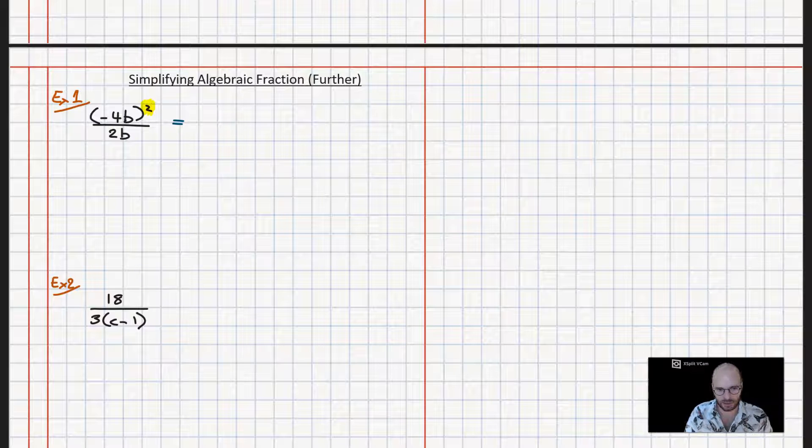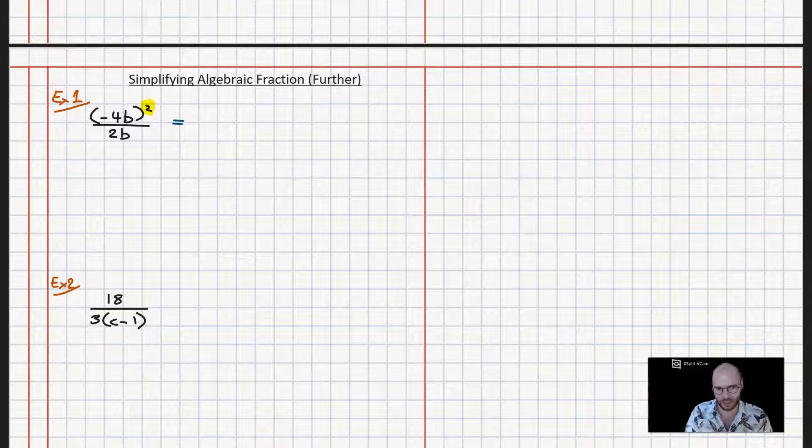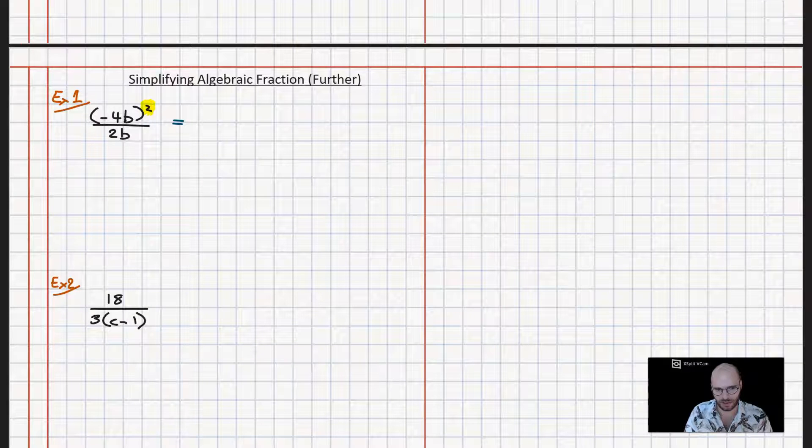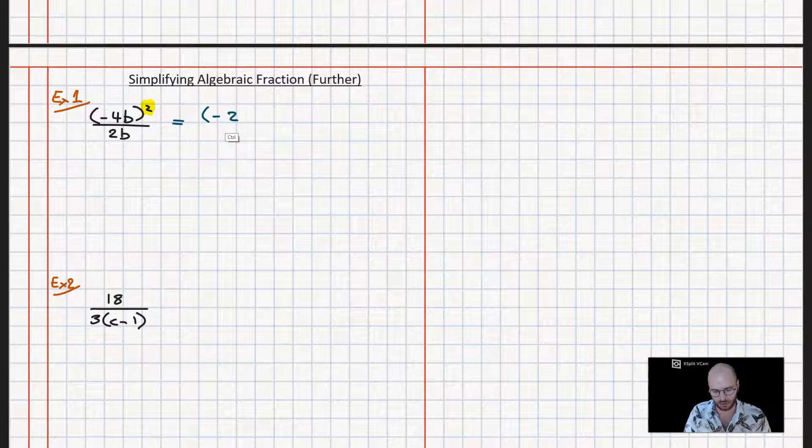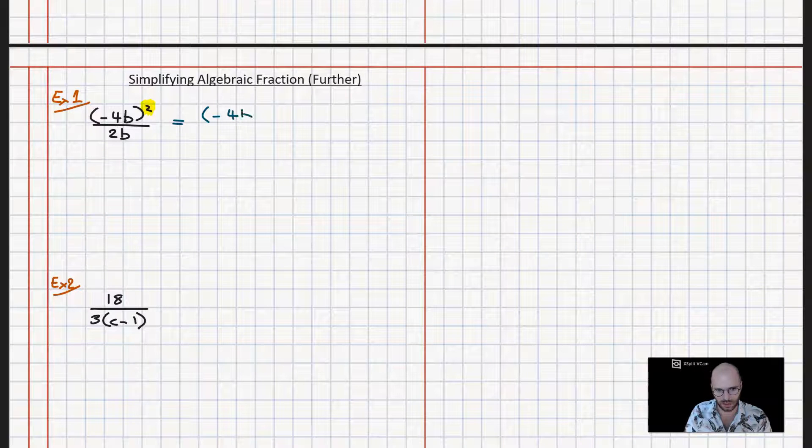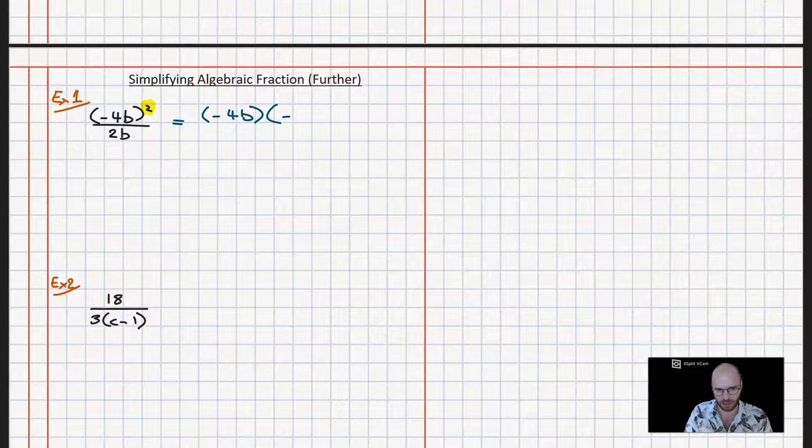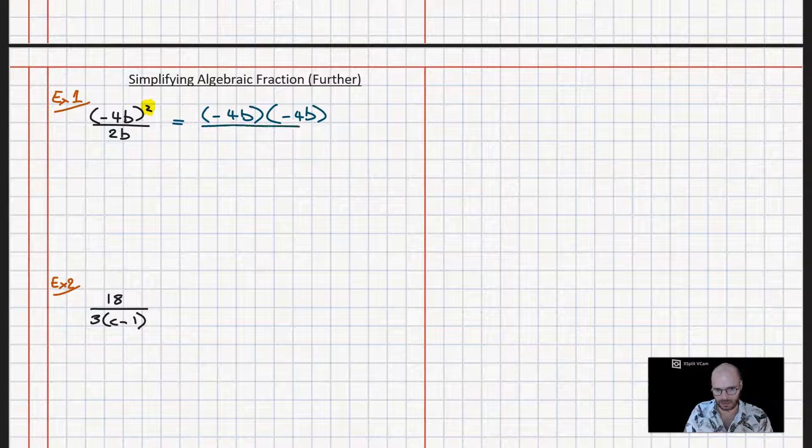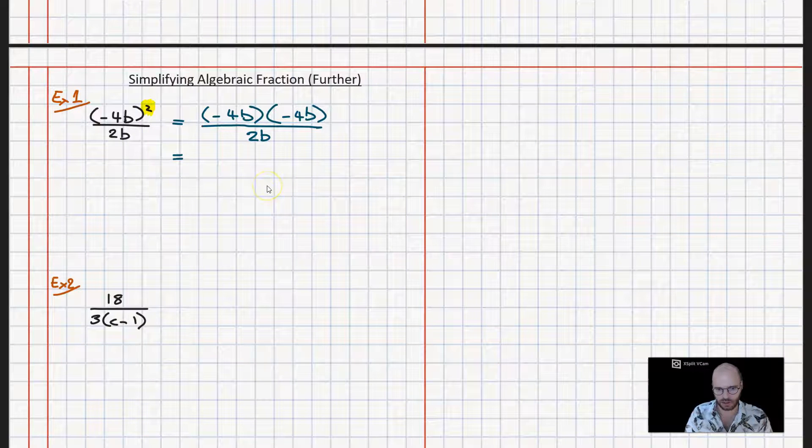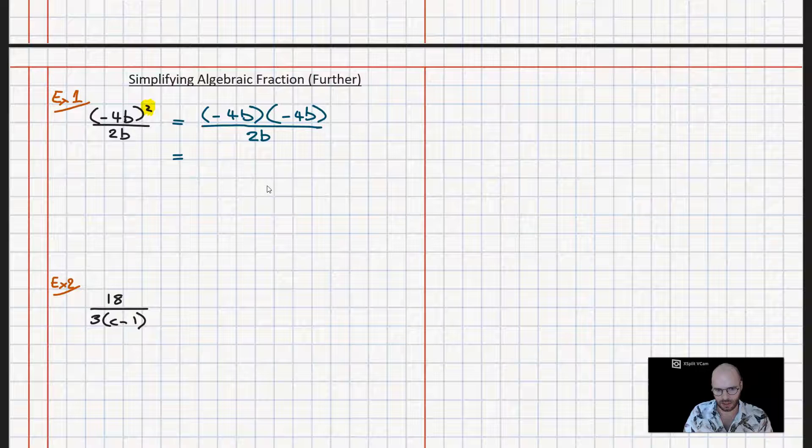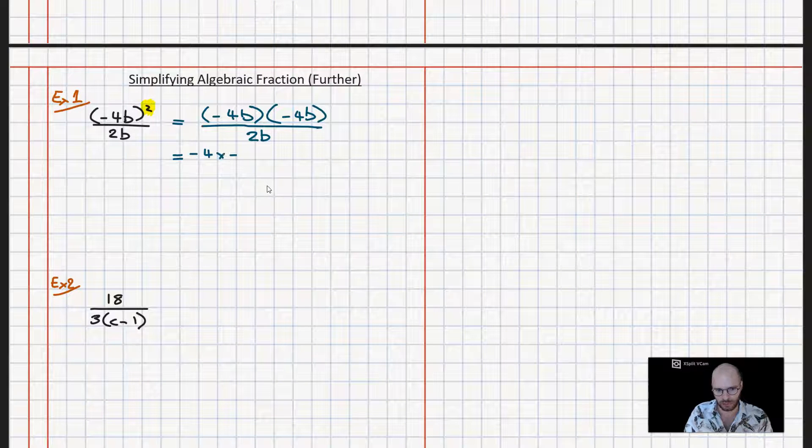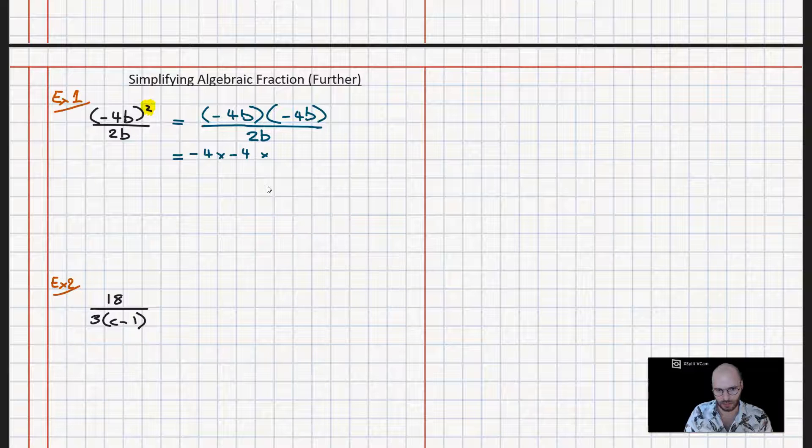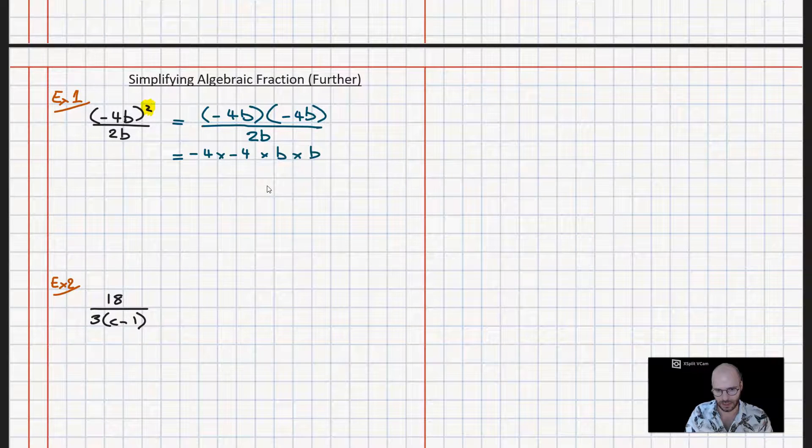So what does the squared symbol mean? It means it's a repeat of whatever's inside the brackets. So I've got this minus 4b, and there's a second one minus 4b because it's squared, and that's still all over 2b. Now evaluating these two brackets upstairs in the numerator, we're going to get minus 4 multiplied by minus 4 times b times b, and downstairs we have 2b.